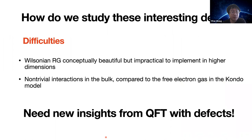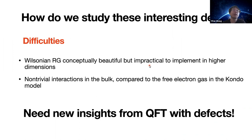How do we study these interesting defects? Extending the success of the Kondo model faces immediate difficulties. The Wilsonian RG, which was very powerful in solving the Kondo problem, is still conceptually beautiful in higher dimensions but impractical to implement in higher-dimensional scenarios. Moreover, these higher-dimensional theories typically have non-trivial interactions in the bulk, as opposed to the free electron gas in the Kondo model. We need some new insights from quantum field theory in the presence of defects.